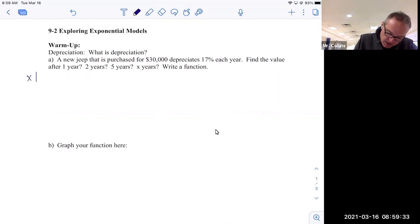So I'll set up just a little table here. I'll set up an XY table. Really, it should be like time and money, but X will be my time unit. So zero would be the original cost of the Jeep, which is of course $30,000.